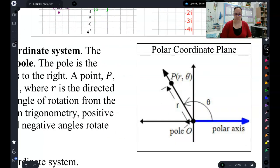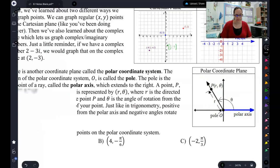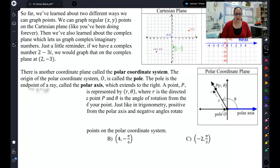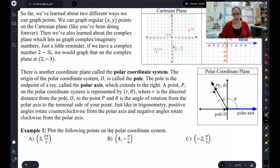We're going to introduce a new one called the polar coordinate plane. Now, the polar coordinate plane, we graph things as r comma theta, meaning r is how far you are from the origin.